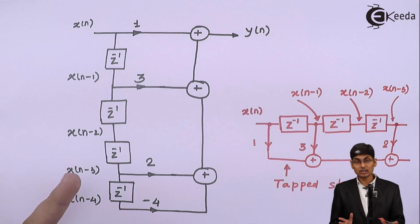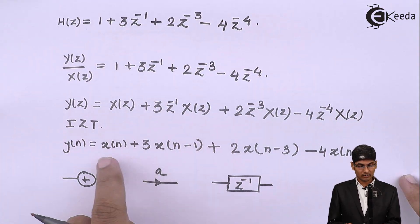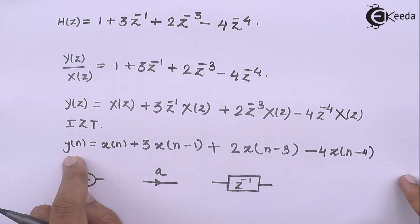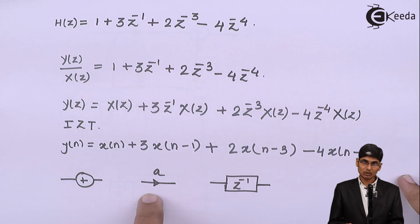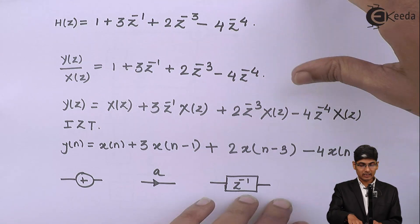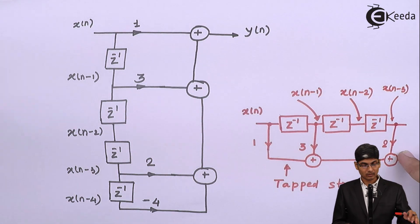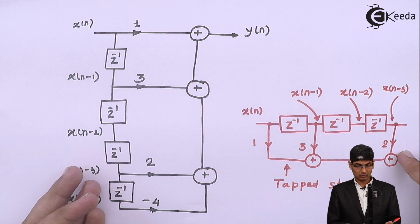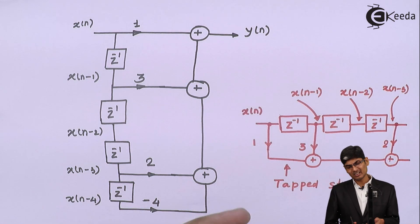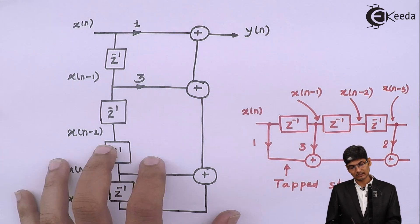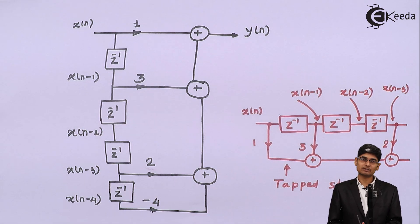So, this is the solution of the problem. We started with H of Z. We have seen how X of N are related to Y of N. They are summed up, then they are multiplied by coefficient and they are delayed. So, we have a delay block, we have a summing block, and we have an amplifier block. And then we have to combine them in such a way that they will result into Y of N. And there are two basic types of structure that we can design. One is the lateral structure, and one is the tap structure. Basically, we will be using this type of structures rather than this type of structures. But there is nothing wrong in designing or drawing this type of structures for a direct form FIR filters. Thank you.